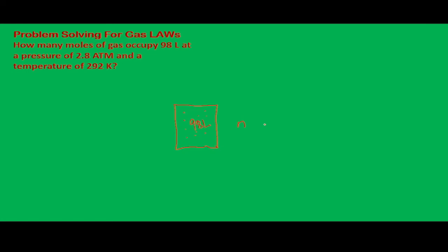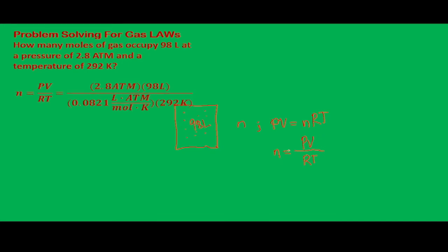N is related to the ideal gas equation: PV = nRT, where R is the gas constant and T is the temperature in the Kelvin scale. We derive for N, and we find that N is equal to PV divided by RT. This is our formula, and then we're going to plug the values in.